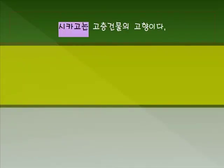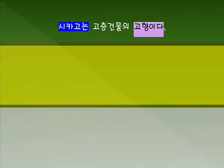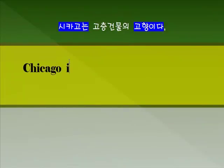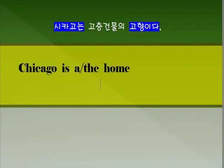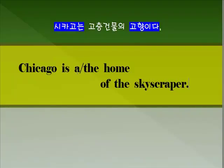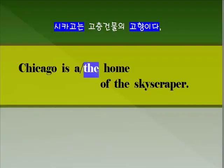두 번째 문장입니다: '시카고는 고층건물의 고향이다.' 고향은 'home'. 고층건물 — 'skyscraper'를 쓰겠습니다. 부정관사를 쓸 때는 고향이 여러 개 중 하나일 때이고, 정관사 'the'를 쓰면 하나밖에 없는 것입니다. 시카고가 고층건물의 고향 — 하나밖에 없으므로 정관사 'the'를 쓰는 것이 자연스럽습니다. 따라서 'Chicago is the home of skyscrapers'.